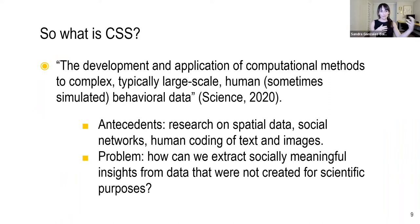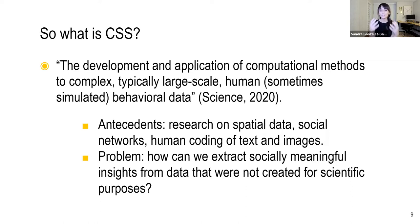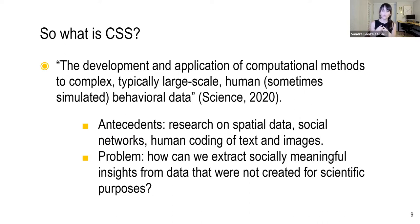But what is computational social science? Many of you have heard the joke: 'I use a computer — is that computational social science?' The definition we offer in the 2020 piece is that computational social science deals with the development and application of computational methods to complex, typically large-scale, human behavioral data — though sometimes we also use simulated data. The key word to my mind is 'complex.' Intellectual antecedents include research on spatial data, social networks, and human coding of texts, images, and so forth.